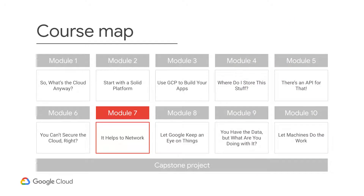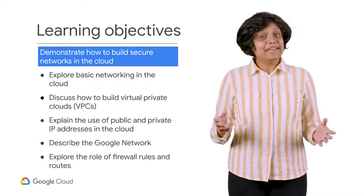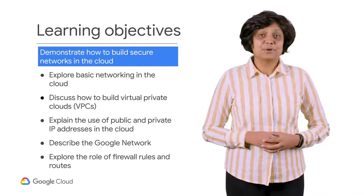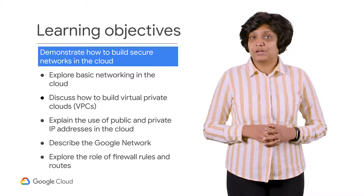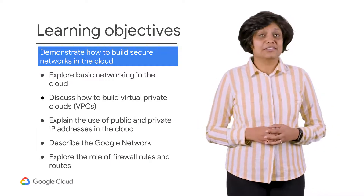So far in this course, you've learned what GCP is, how GCP supports the building of apps, different storage options, the use of APIs, and cloud security. In this module of the Google Cloud Computing Foundations course, you'll find out how networking in GCP works and what you need to consider before setting up those networks. The main objective of this module is to be able to demonstrate how to build secure networks in the cloud.